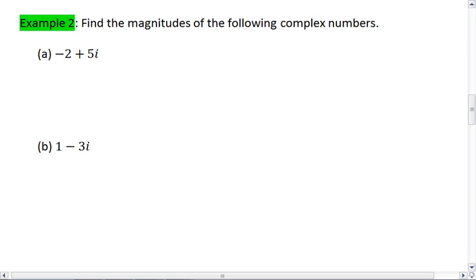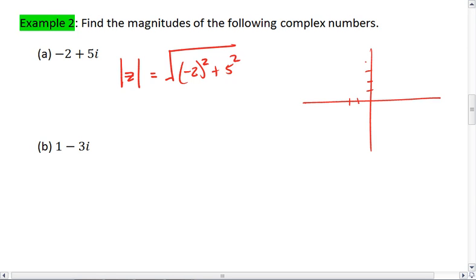For the first one, we have the complex number negative 2 plus 5i. The magnitude of this number is going to be the square root of negative 2 squared plus 5 squared. Because if we were to graph this point, we're at negative 2, positive 5. And to find the distance from the origin, we use the Pythagorean theorem with a triangle of legs 2 and 5.